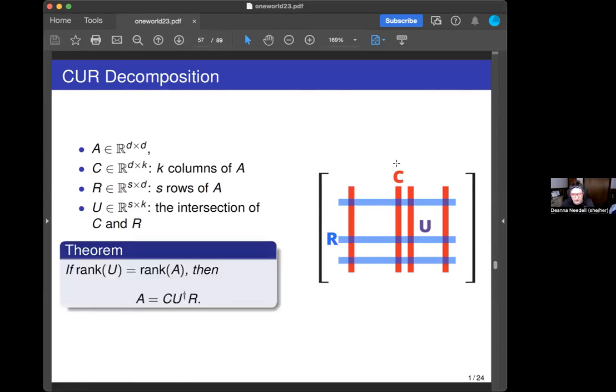The classical result for the matrix case is that if the ranks of U and A are the same, then this actually gives you a factorization for A. You can write A as C times the pseudo inverse of U times R. Why does this even fit in the context? This is another factorization where these factors are actually human interpretable. C is just a submatrix of your own data, so of course you understand what that is. R is the same. So your building blocks become actually parts of your data. I think this can be really useful for interpretability.